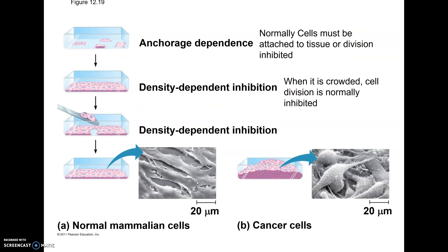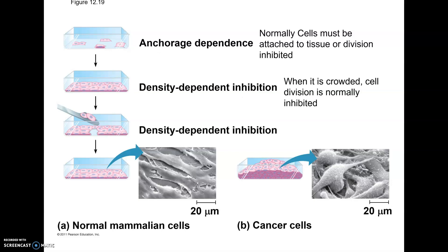Anchorage dependence is the name for when cells have to be attached to something to divide. So if a lung cell breaks off and travels to another location, it shouldn't be able to divide because of anchorage dependence — it's not attached to the normal spot and therefore should not receive the signal that it's okay to divide. Density-dependent inhibition means that when cells are crowded and touching each other, they send signals saying it's crowded, don't divide. Cancer cells are not obeying these rules — that's why cancer can spread.